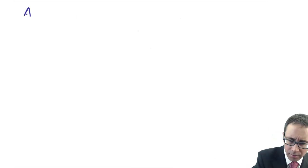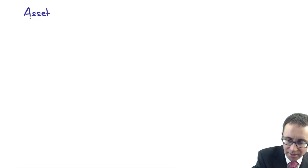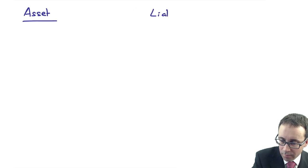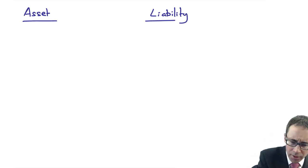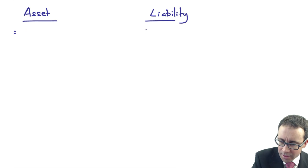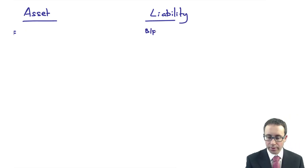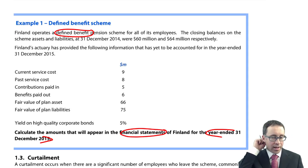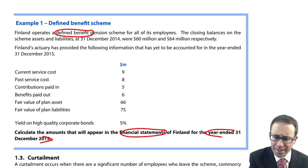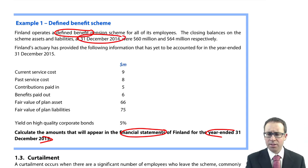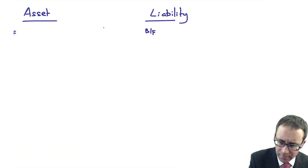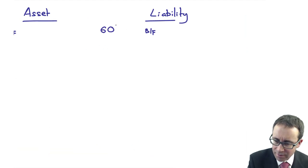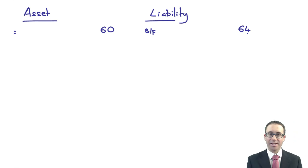The remeasurement component would need a working. I would split my page into two halves to look at the working for my assets and then the working for my liability. What we usually start off with is the brought forward that is then reconciled to the carry forward. The closing balances on the scheme assets and liabilities at December 2014 were 60 and 64 respectively — so on my assets I have 60, on my liabilities I have 64.